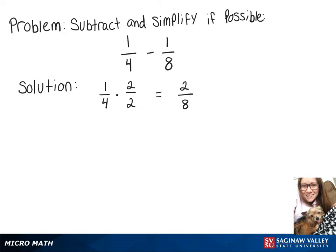So now we can look at this problem as 2 over 8 minus 1 over 8, which is equal to 2 minus 1 over 8, since they have that common denominator, and then 2 minus 1 is 1, so our final answer is 1 over 8.